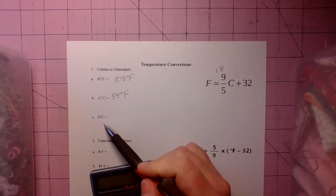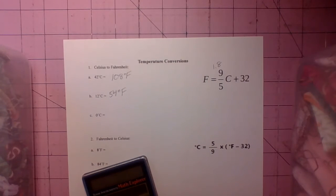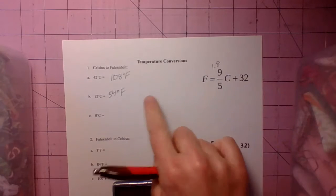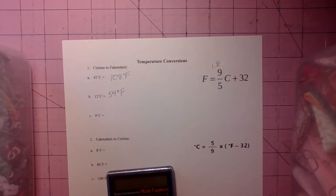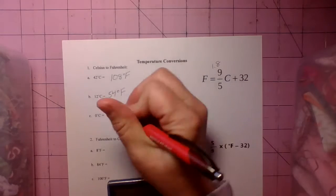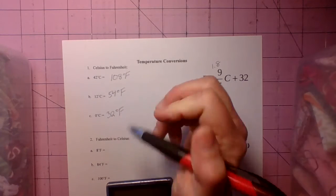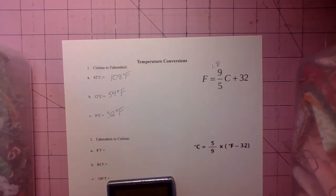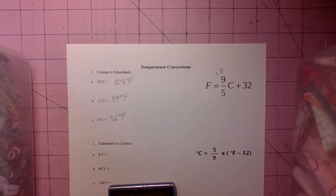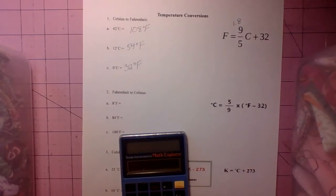Alright then letter C, 0 degrees Celsius. So 0 times 1.8 of course is going to be 0 and then you add 32, that's going to be 32 degrees Fahrenheit. That's the freezing point. If you have any questions about those make sure, go back, re-watch that portion of the video.